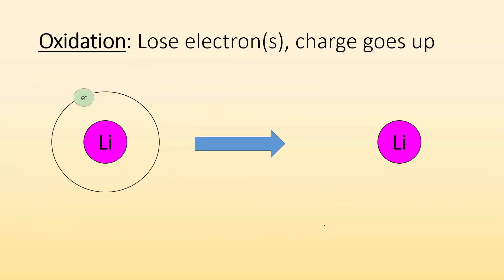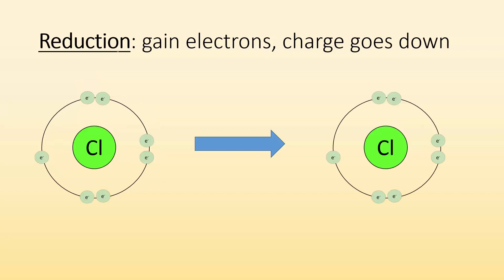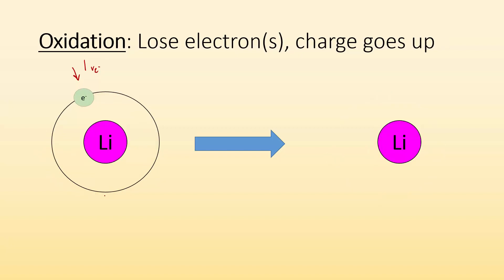Oxidation is when you lose electrons and the charge goes up. Here I have a lithium atom, and I'm only showing the valence electron — there's one valence electron. What lithium likes to do is lose that electron; it likes to oxidize. It starts off as Li with a zero charge, and then there's no more electron. So it became the lithium ion, Li⁺, because it lost that electron.